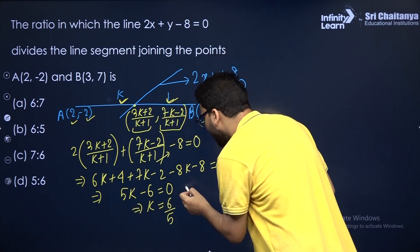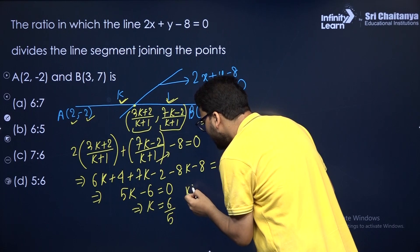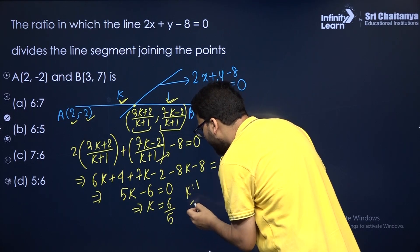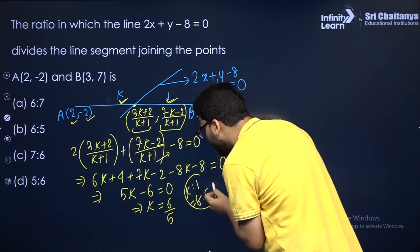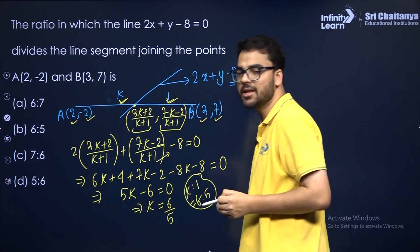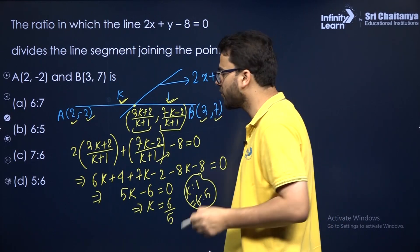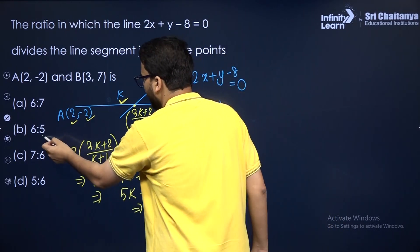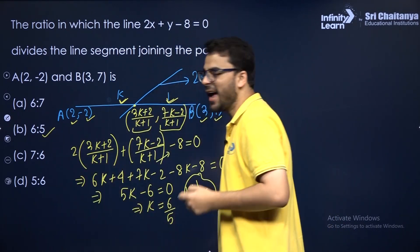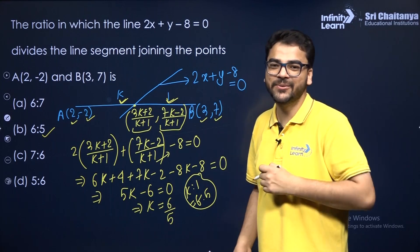So k to 1 can be written as 6 to 5. This is an important question based on the section formula, and the answer is 6 to 5. I hope it is clear to you.